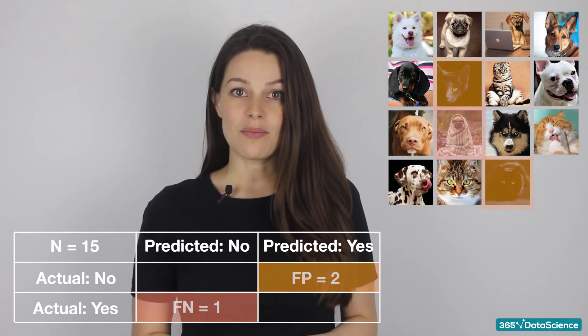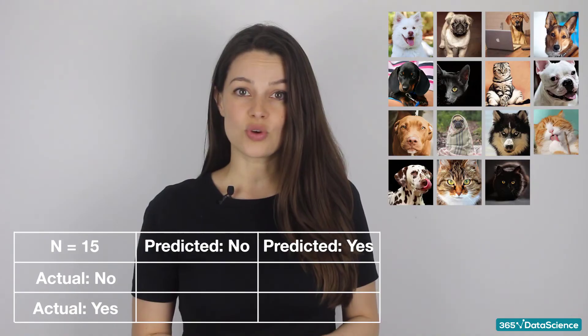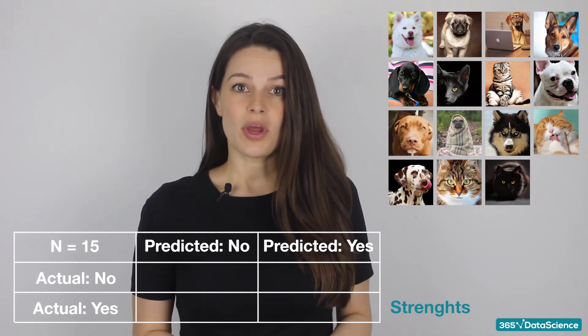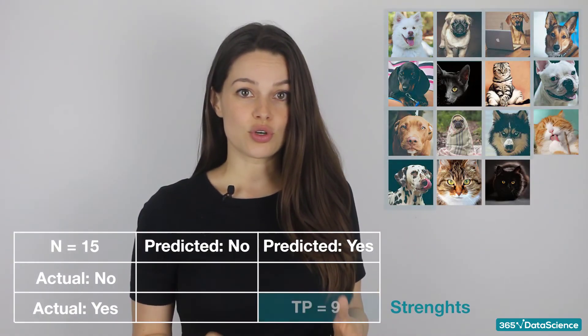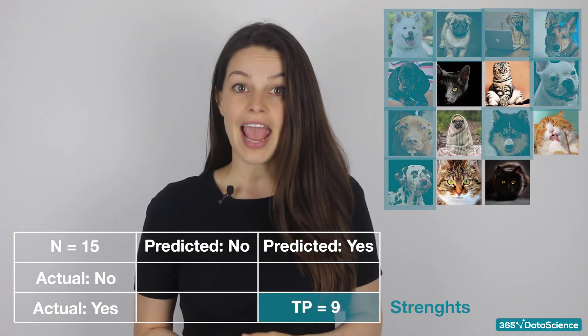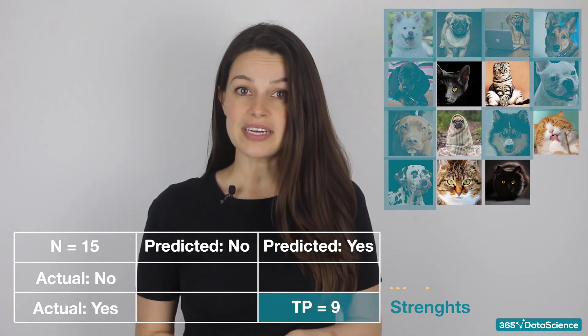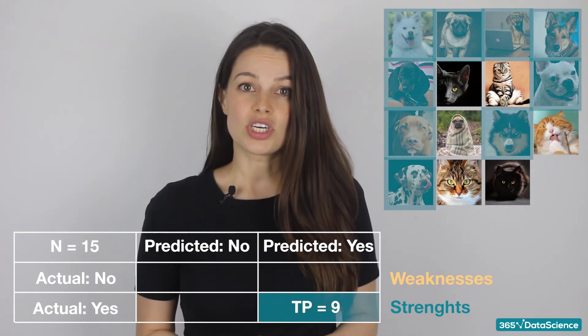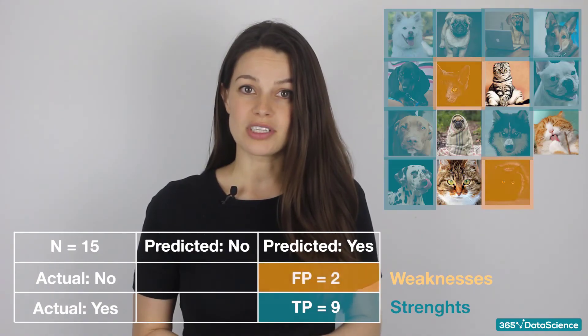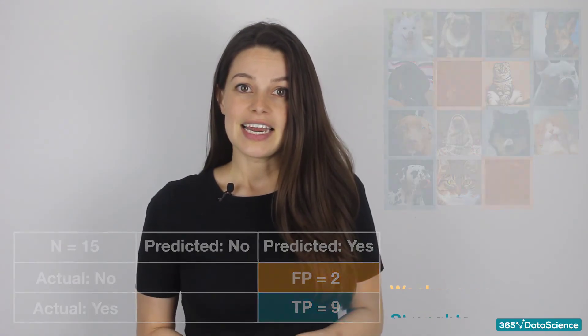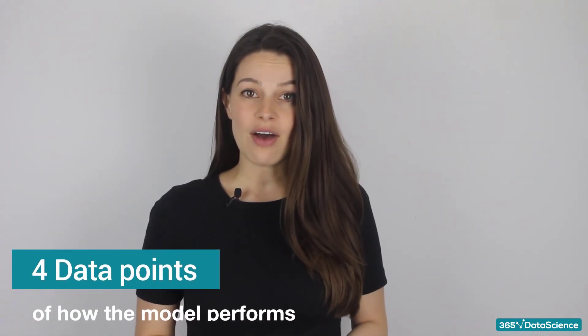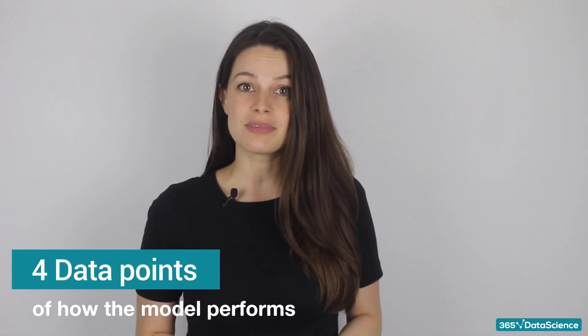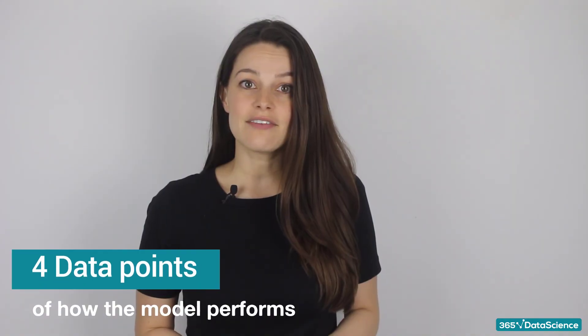Now visually we can see what predictions are made correctly and which ones were made incorrectly. We can also see what the model's strengths were, which are the true positives, and what the model's weaknesses are, which are the false positives. Now you have four data points of how this model performs instead of just one.